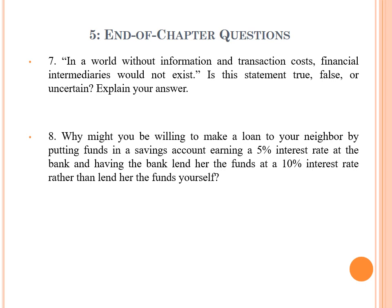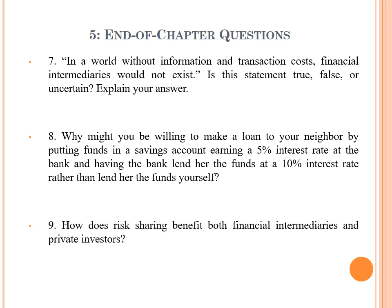Eight: why might you be willing to make a loan to your neighbor by putting funds in a savings account earning five percent interest at a bank and having the bank lend her the funds at ten percent interest, rather than lending her the funds yourself? Nine: how does risk sharing benefit both financial intermediaries and private investors? Let's try to answer these nine questions, and we'll cover them in the next lecture. Thank you so much.